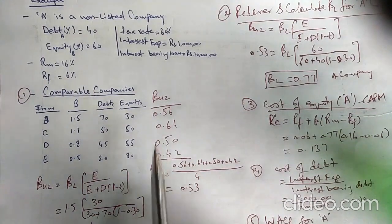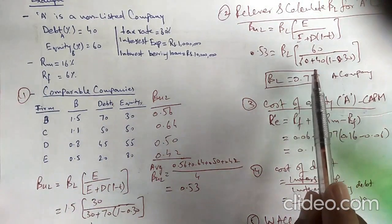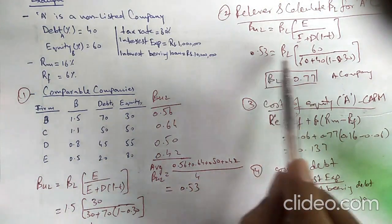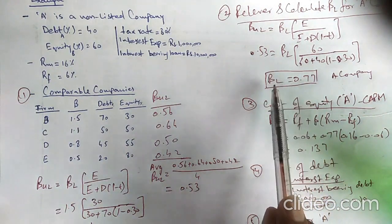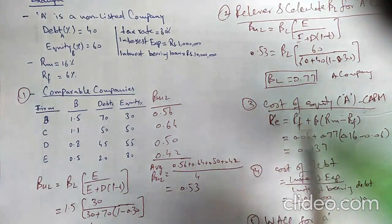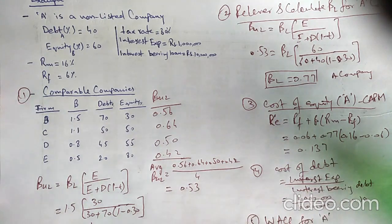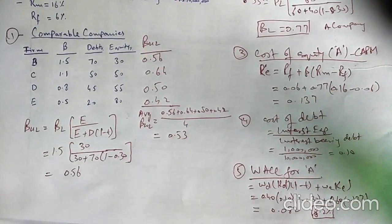To summarize: first, calculate the average unlevered beta for comparable listed companies. Then use this value to calculate the levered beta for the non-listed A company. Put this levered beta into CAPM to calculate the cost of equity, and use the interest expense formula for cost of debt. Finally, plug all values into the WACC formula to get the cost of capital for the non-listed company.